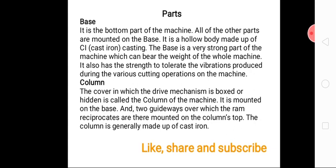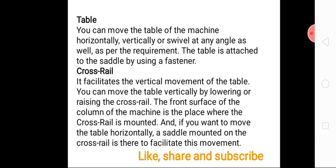The base is made of cast iron because it has better vibration absorbing capacity. Above the base, on the extreme right, there is the column. In this column all the driving mechanisms of the shaper machine are enclosed. Above the column there are two rails, and on those rails the ram is situated and moves.